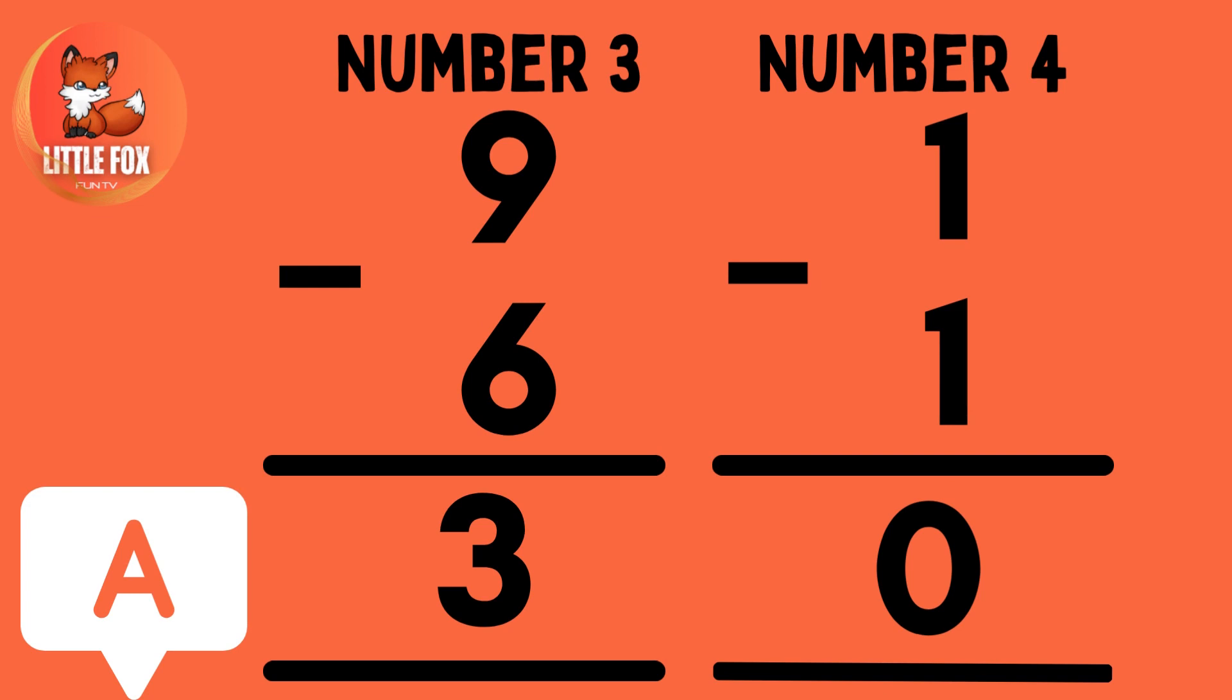Number 3. 9 minus 6 is equals to 3. Number 4. 1 minus 1 is equals to 0.